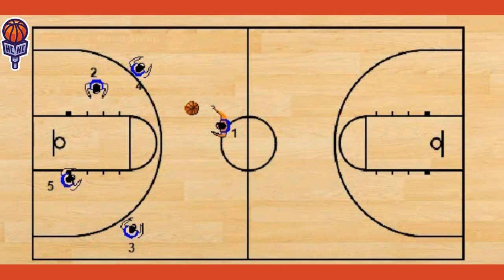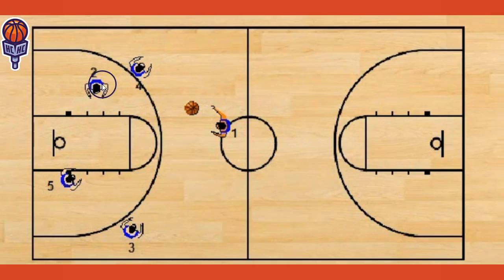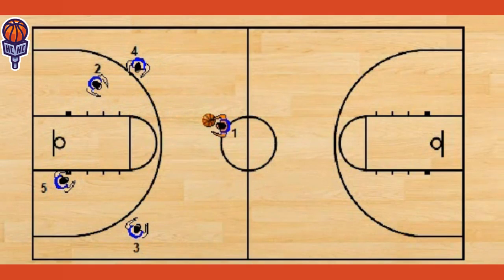Here is a good screen set by these players — four sets a good screen for two, and two makes the back cut. The point guard has to recognize that and do his best to make that pass. If the point guard makes that pass, that doesn't mean he can't shoot it if he's open.